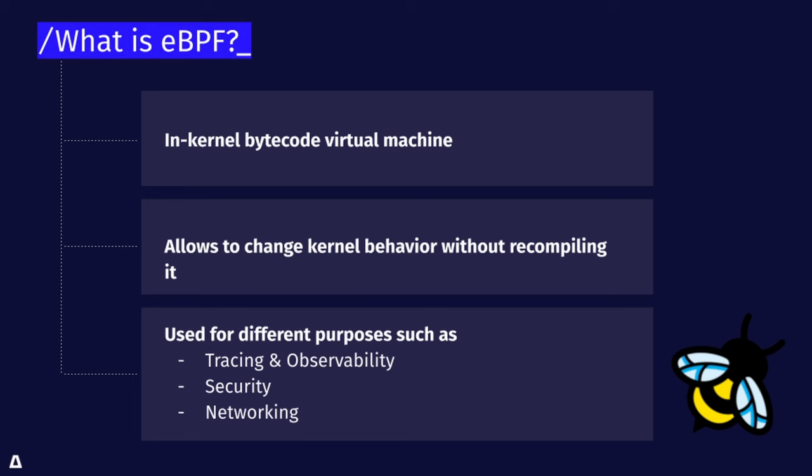eBPF is basically small programs that you can load into the kernel as bytecode and they run inside of a virtual machine, or a sandbox. This allows one to easily make modifications to the behavior of the kernel without having to recompile it.